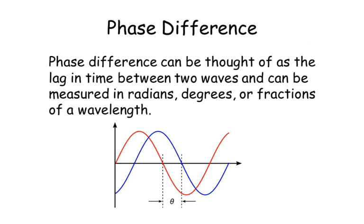Phase difference. So phase difference can be thought of as a lag in time between two similar waves of the same frequency, and we can measure in radians, degrees, or even fractions of a wavelength.